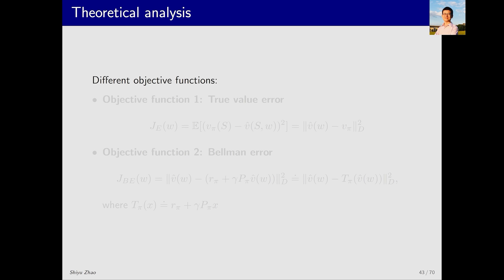In fact, there are multiple objective functions. The first one is the one we just discussed. We can write it in a simplified form, as a vector v hat and v pi, where each element of the vector corresponds to each state. The double vertical lines represent the vector norm. The d, in the subscript, represents a matrix weight. In particular, a vector x d squared is equal to x transpose times dx. Here the diagonal elements of this d are actually the state's probability distribution, which is represented by d pi. In summary, this is the objective function we have discussed earlier.